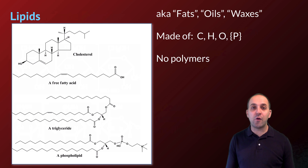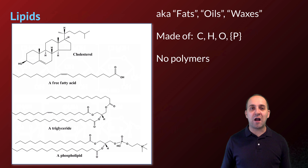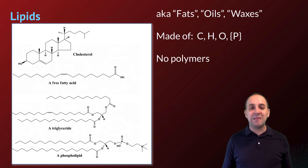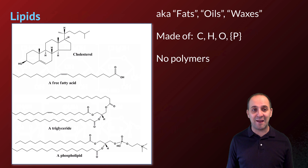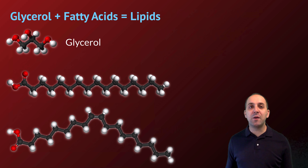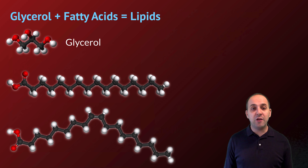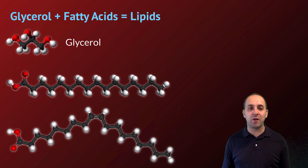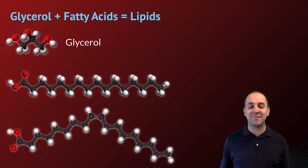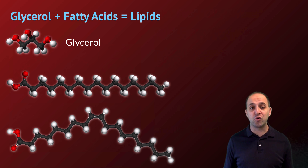The second group of biological macromolecules is the lipids — also known as fats, oils, and waxes. These are made out of carbon, hydrogen, and oxygen, though one group also includes phosphorus. Importantly, there are no lipid polymers — lipids exist only as individual molecules. To build a lipid, you take a glycerol molecule — a short three-carbon alcohol — and attach fatty acids to it. These fatty acids are recognizable by their long tails of carbons and hydrogens extending from a carboxyl group.